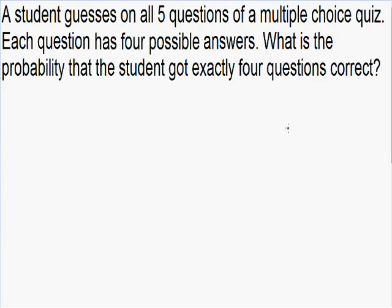So let's write down everything that we know. The student guesses on all five questions of the quiz, so the total number of trials, which we write with the letter N, is equal to five. This question is asking us what is the probability that the student got exactly four questions correct, so out of the five total guesses he succeeds four times. The number of successes, which is the letter K, is equal to four.